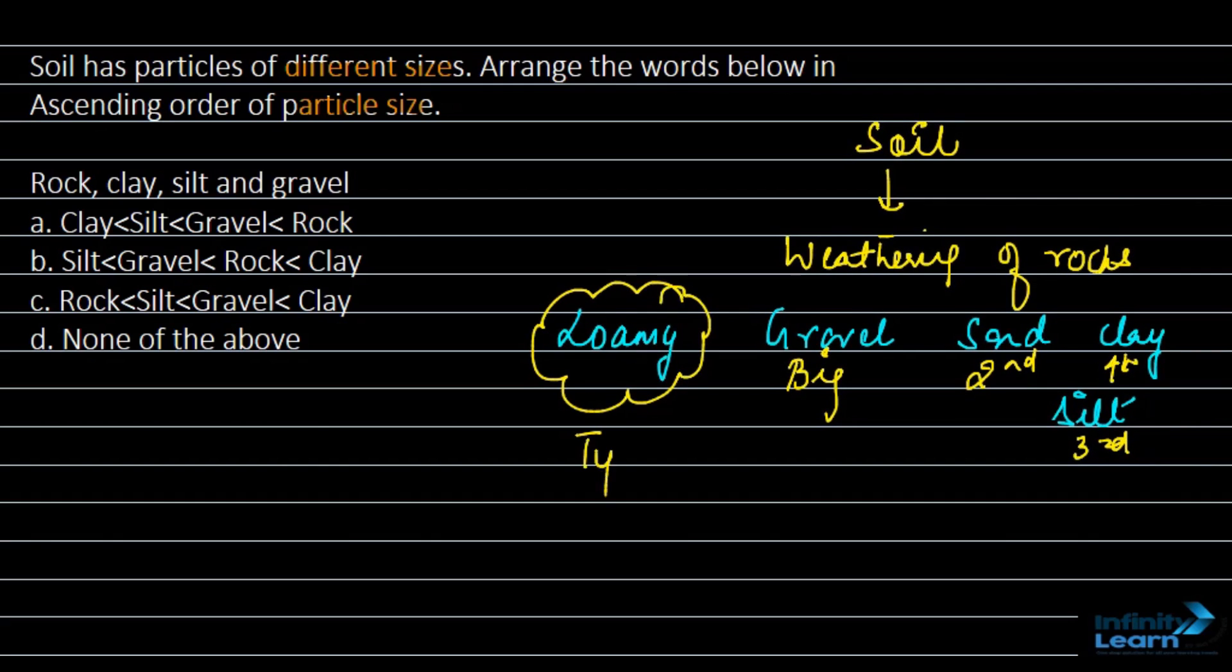And loamy, if we are talking about it, it is actually a type of soil. It is not a particle. And this soil is a combination of silt, sand and clay. It has got all three particles. But if we are talking about just these particles—gravel, sand, clay, silt—their size varies as I told you.